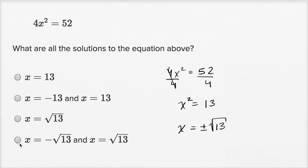So x could be negative square root of 13 or positive square root of 13. The two solutions are x equals the negative square root of 13 and x equals the positive square root of 13. So that's our choice right over there.